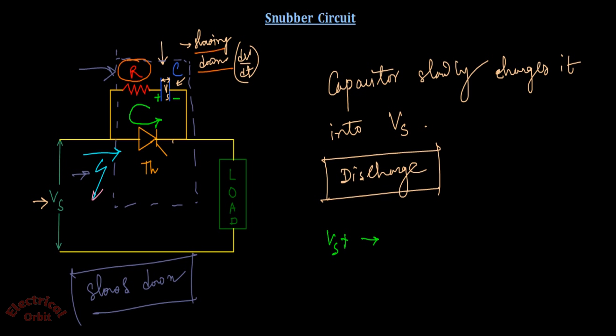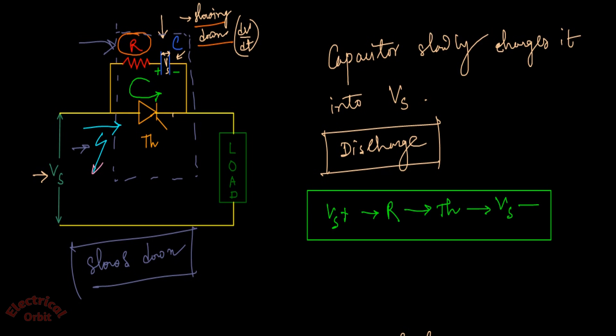So the path will be vs plus to R to thyristor to vs minus. So whenever the thyristor is going to discharge, then a current—suppose I—is flowing through the circuit or this closed path. Now what is the value of this current? The value of this current is vs divided by resistance of the thyristor.